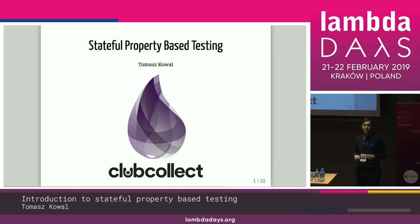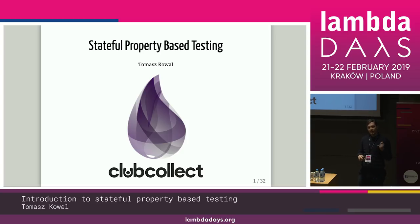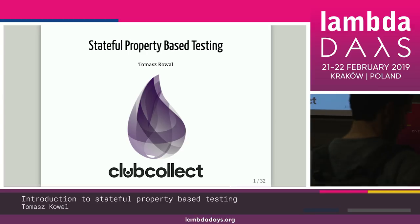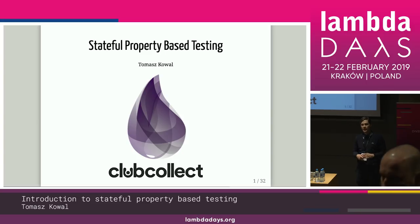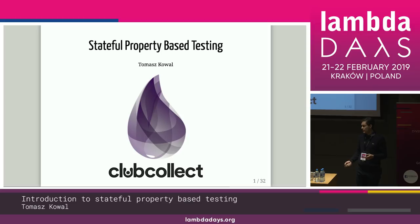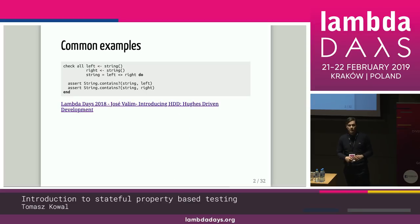That sometimes creates edge cases that we didn't think about. So every time we encounter such an edge case, we start to think: can we do better? Can we prevent it? Can we test it? Can we generate all those different examples? And that's why I became interested in property-based testing. I started asking around my local community what were their encounters with property-based testing.